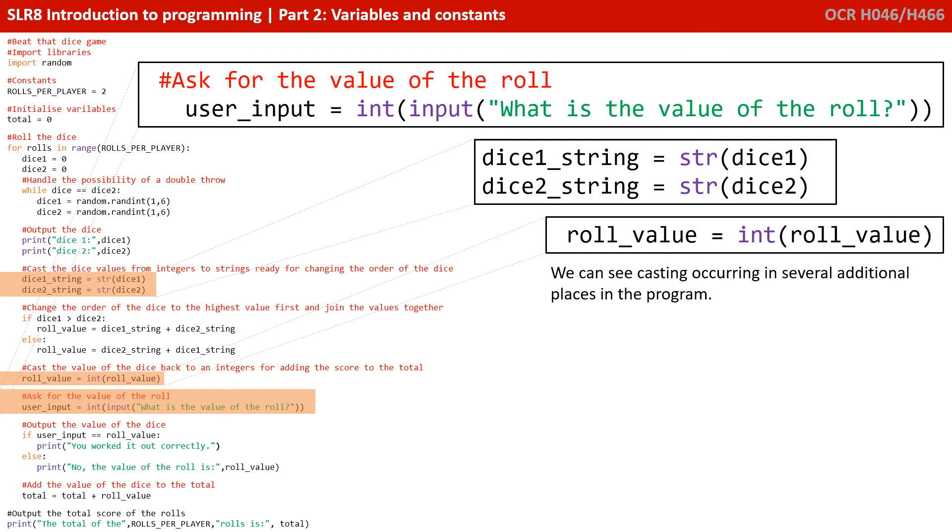We can see casting occurring in a number of additional places as well. So we can see in these top two lines that we take the value that's held in the variables dice one and dice two, which are integers, and then we cast or convert those into their string equivalents, and then assign those to the variables dice one string and dice two string.